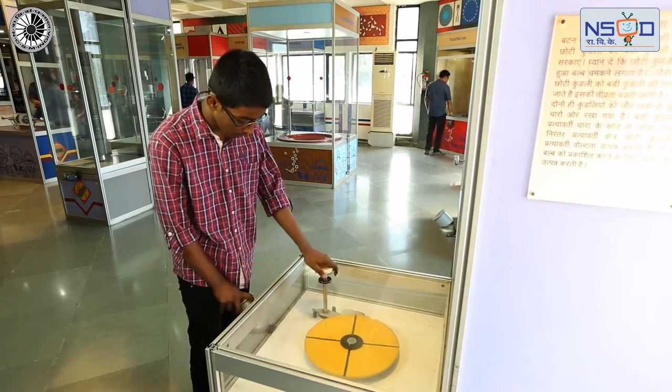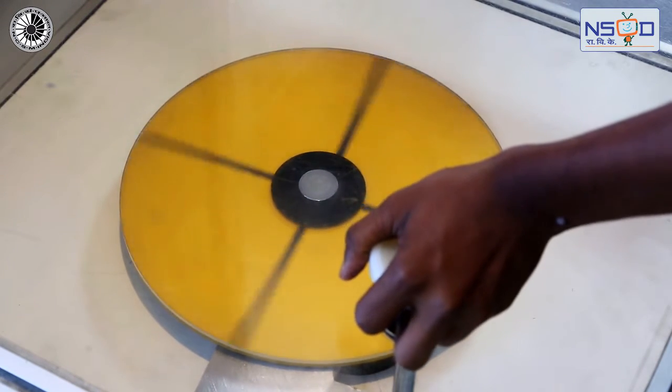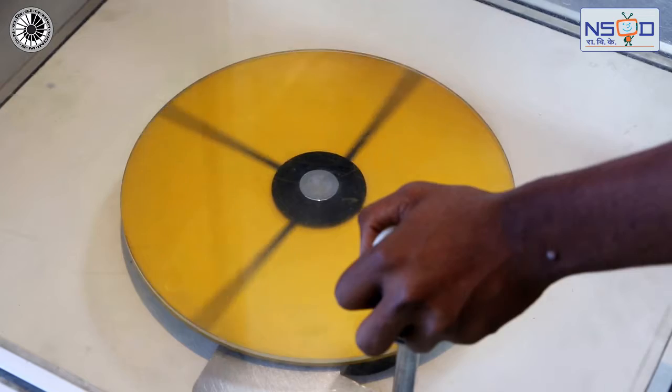Keeping the switch pressed, rotate the knob to bring the attached aluminum sheet at the extreme end. The disc starts rotating.